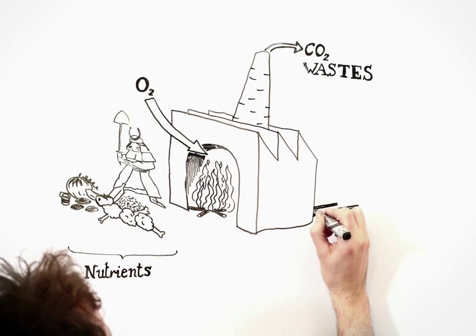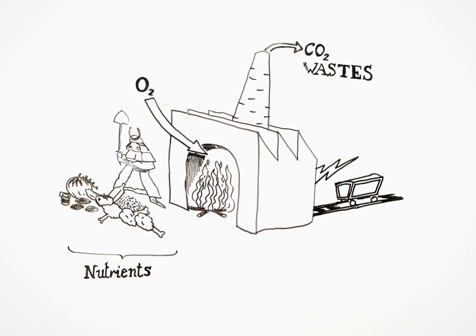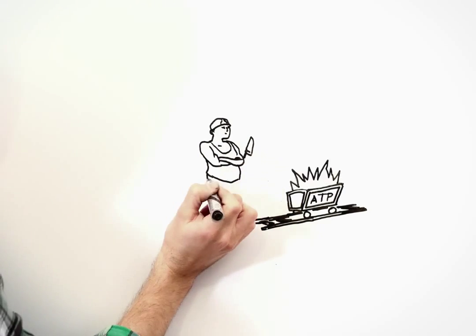The energy produced is transferred in a small transport molecule called ATP. This energy will then be used for the other part of the metabolism: the anabolism.